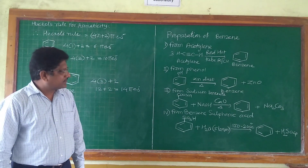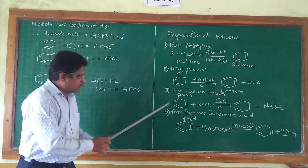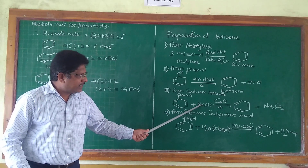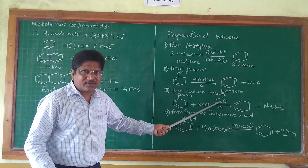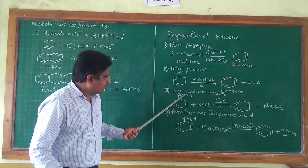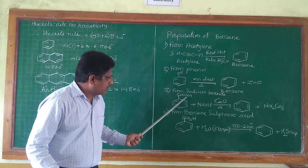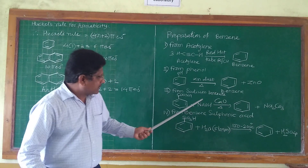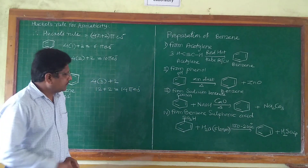The third method for preparation of benzene is from sodium benzoate. When sodium benzoate reacts with an alkali like sodium hydroxide in the presence of lime (calcium oxide) and is heated to a certain temperature, the carboxyl group gets removed and benzene is formed. The COONa and calcium oxide get converted into sodium carbonate.